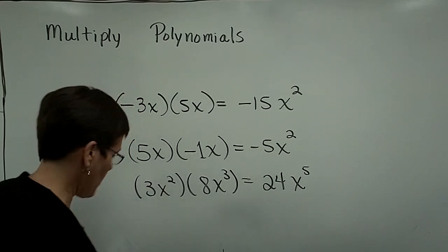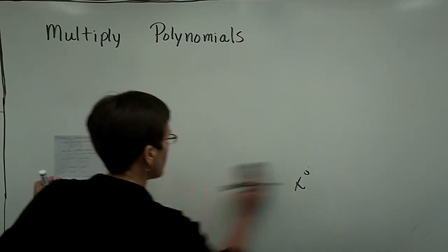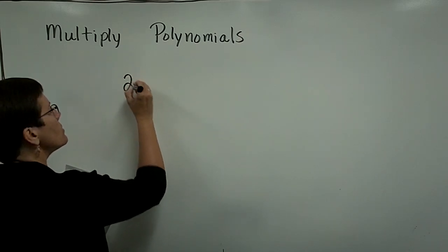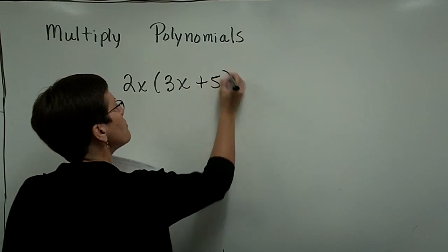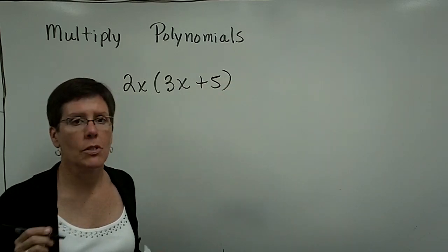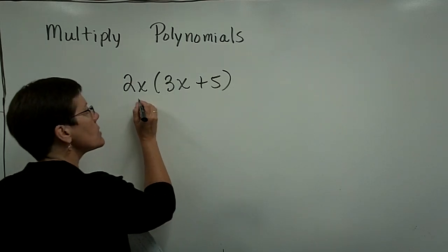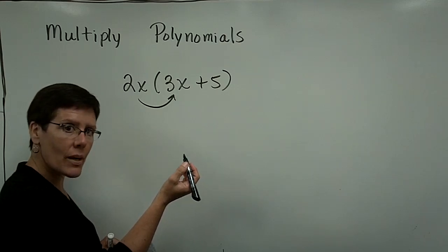Let's now multiply a monomial times a binomial and then times a trinomial. Now that we've got that down. So if I were to ask you to take 2x times 3x plus 5, I'm asking you to distribute the 2x times the two terms in the parentheses. So I'm asking you to take 2x times 3x and get 6x squared.